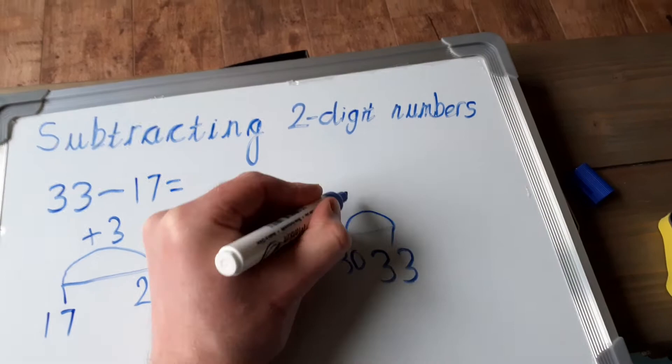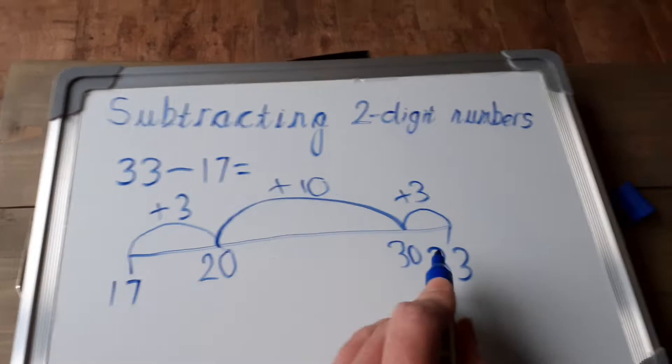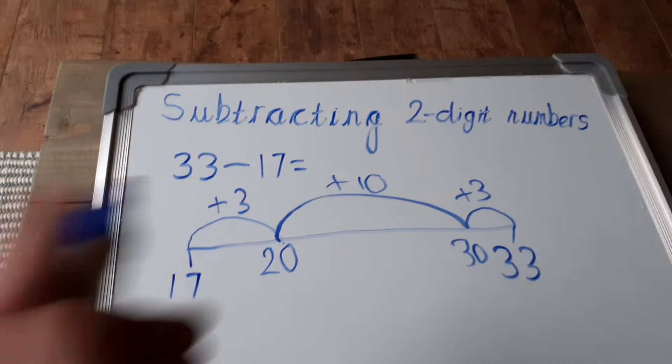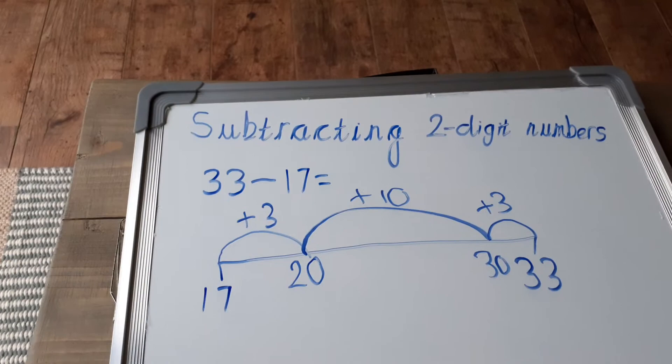So there we go, we've got from 17 up to 33. And now what we need to do is add these three numbers together. So we know that 3 add 3, double 3 is 6, and we've got 10 here. So we're adding 10 and 6 together. Think about our place value, 10 add 6 is 16.